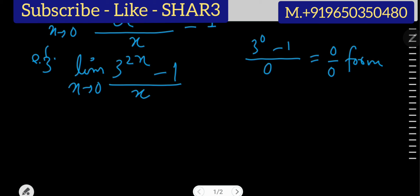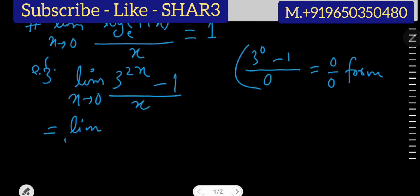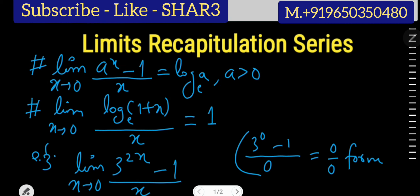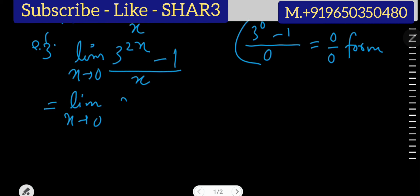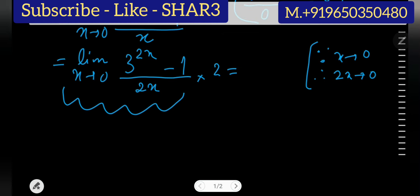This is an indeterminate form. To get rid of it, we compare the function (3 to the power 2x minus 1) over x with the first formula. Whatever the exponent of constant a, it must appear in the denominator and the limit has to be 0. Here the exponent is 2x but the denominator has only x, so we multiply by 2 and divide by 2. If x approaches 0, then 2x also approaches 0.